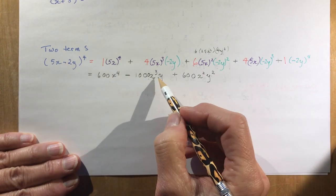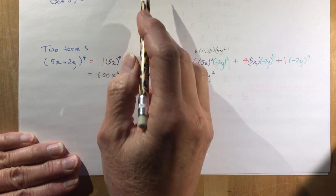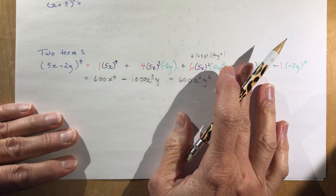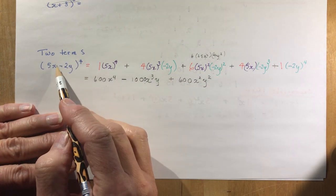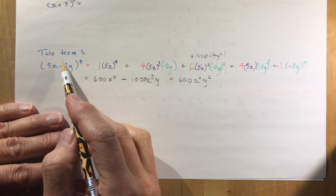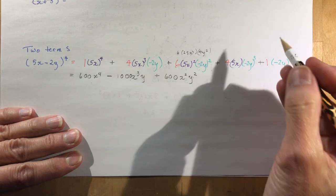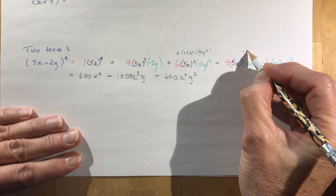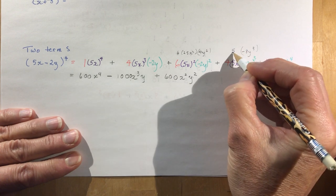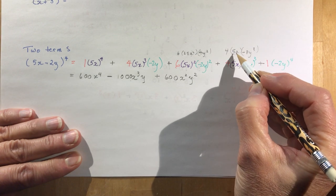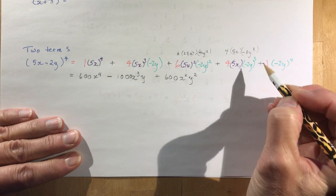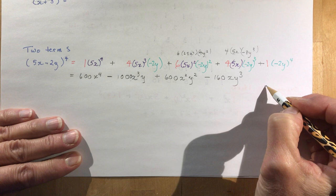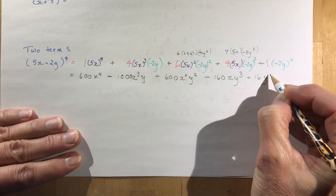Notice: in each term the exponents of x and y add up to 4 — that's because we have two variables, and the sum of exponents always equals the power. Continuing: 4 × 5x × (−2y)³ = 4 × 5 × (−8y³) = −160xy³. Finally, (−2y)⁴ is positive 16y⁴, times 1 gives +16y⁴.